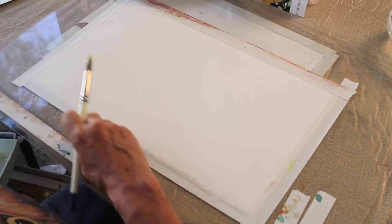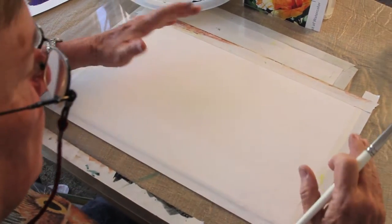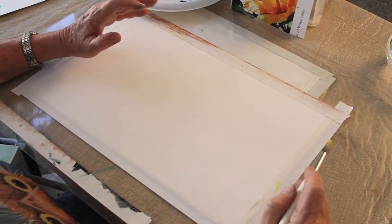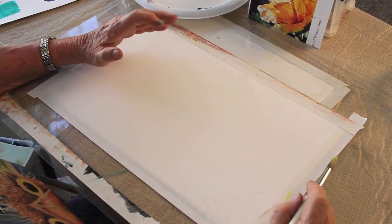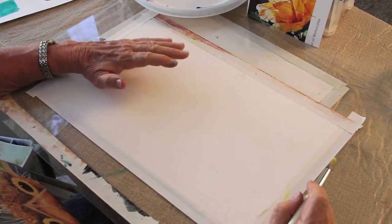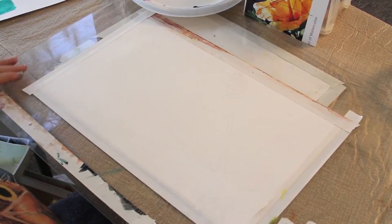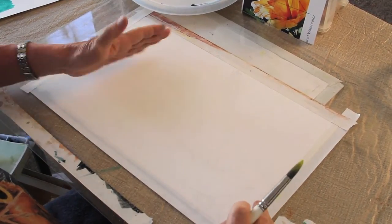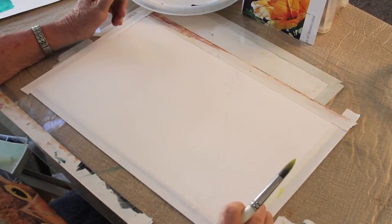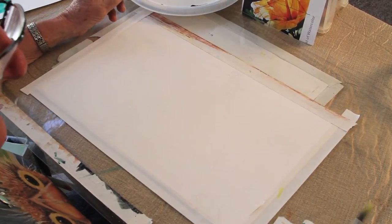I like to tape this down because it will buckle, but after I paint it, I iron it. I iron it with no steam because it's cotton. It's just like material, and then it irons out flat. So, if I get some rumples in it, I'm not going to worry about it.